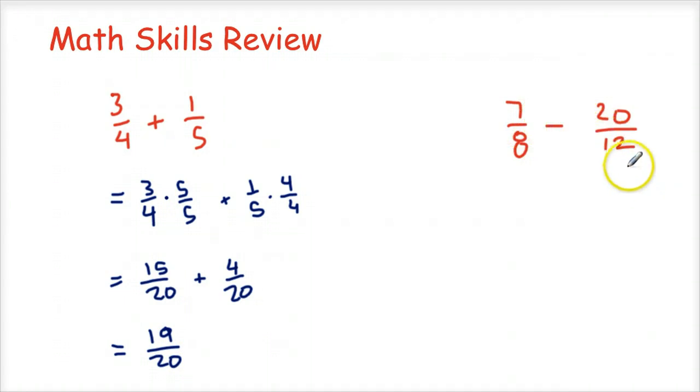Over here, I'm trying to subtract these two fractions. I have seven eighths minus twenty twelfths. And again, here's an example of where I'm not just going to do eight times twelve to get my common denominator. I could, but it's not the least common denominator. I'm going to think of the multiples of eight and the multiples of twelve that are the same. So in this case, when I get to twenty-four, that's going to be the common denominator.